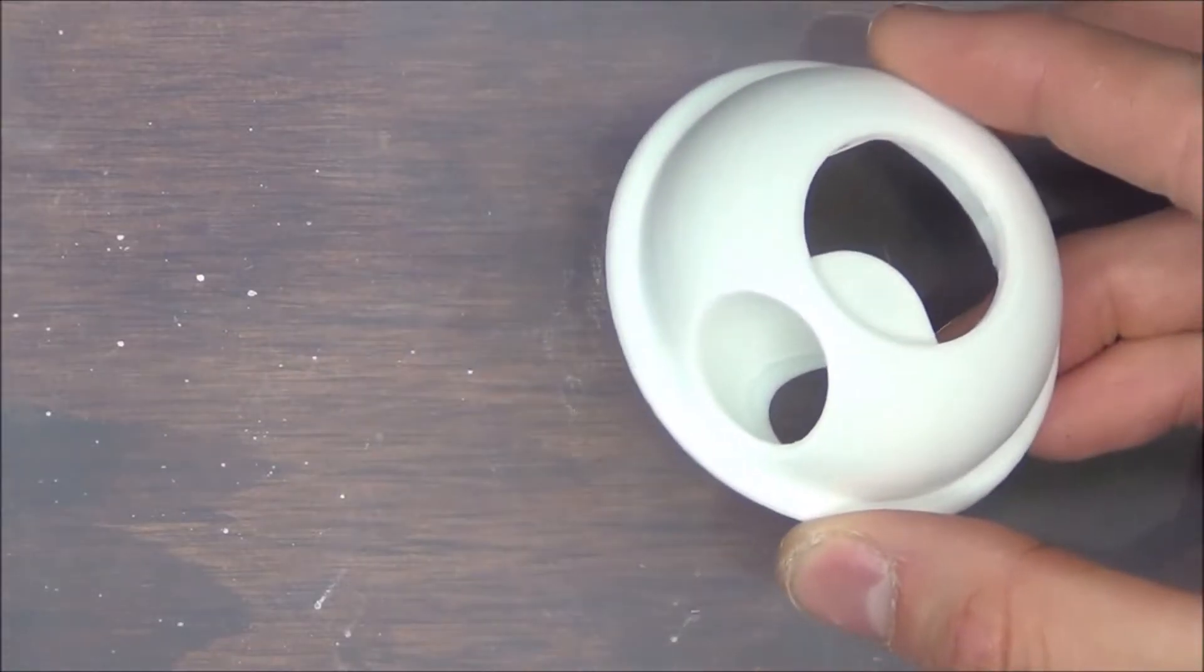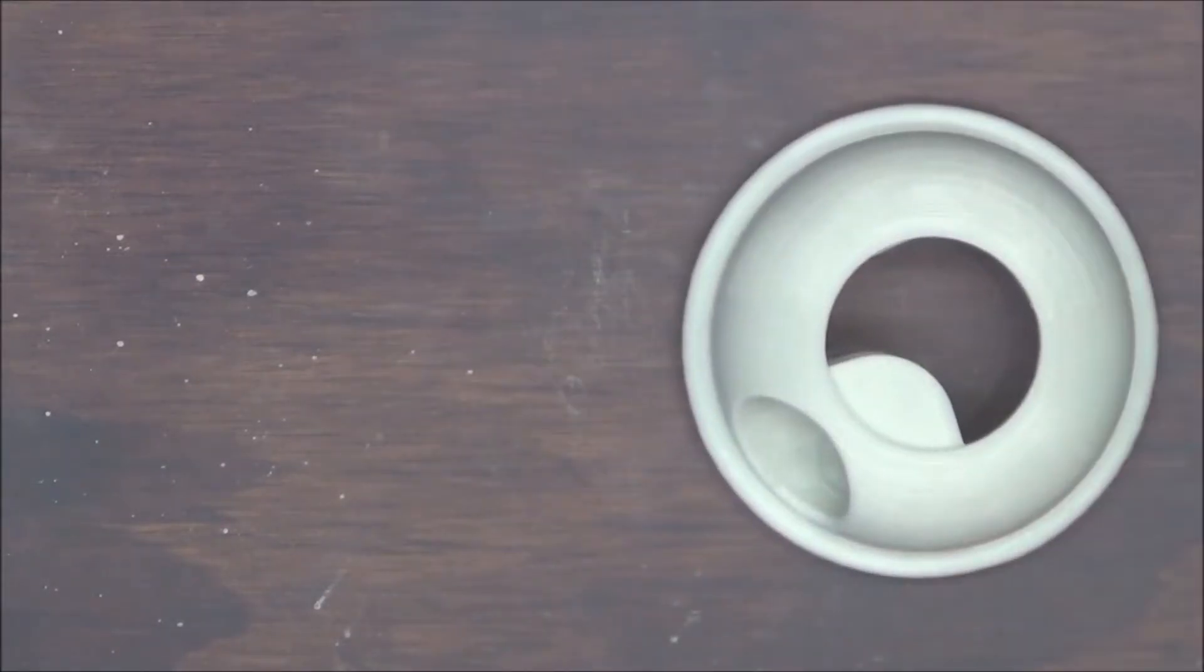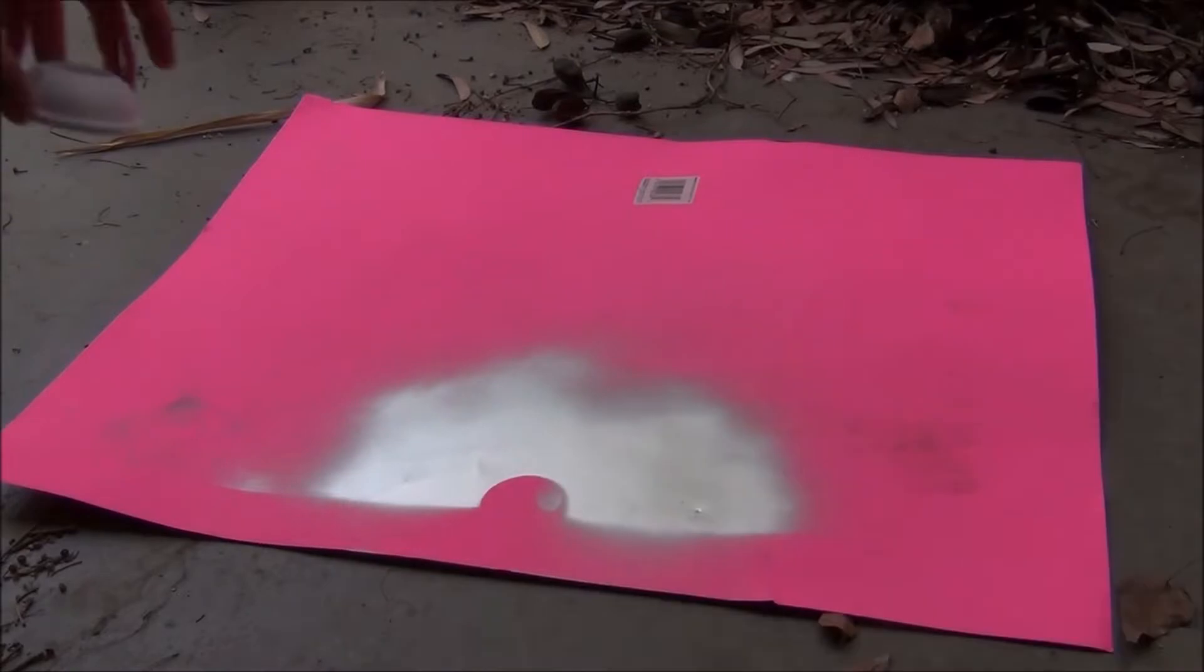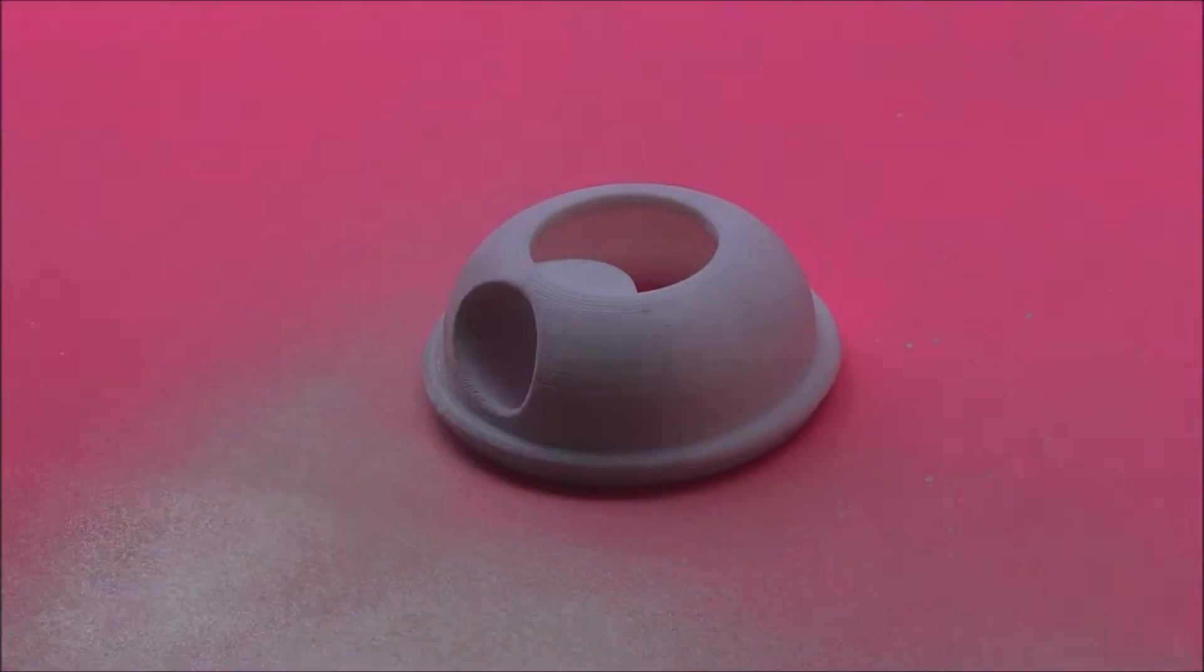Next, we're going to want to take the top of our spray paint can and spray nozzle. We're going to take the top of our spray paint can and spray paint the whole thing inside and out metallic silver.